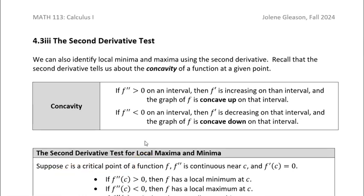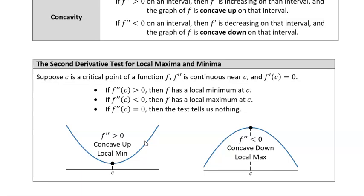The way we use this test is to still find the critical points in the normal way — we set the derivative equal to zero and find the critical points. Once we have the critical points, the second derivative allows us to just test those critical points. If the function is concave up at the critical point, that tells us we have a local minimum.